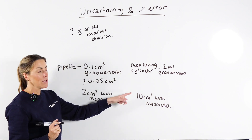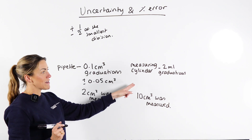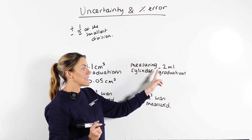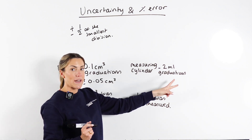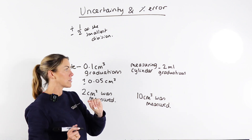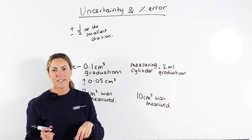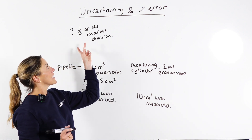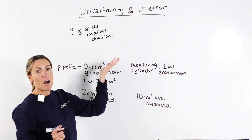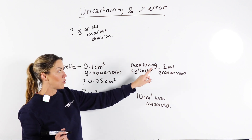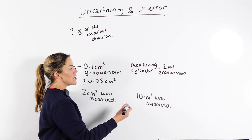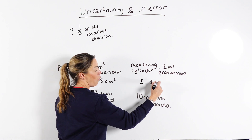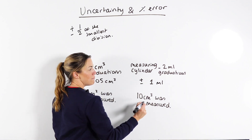Another example: we've got a measuring cylinder. The measuring cylinder has two milliliter graduations on it, so the smallest division marked on that measuring cylinder is two milliliters. The uncertainty is going to be plus or minus half of that smallest division, so the uncertainty here is plus or minus one milliliter.